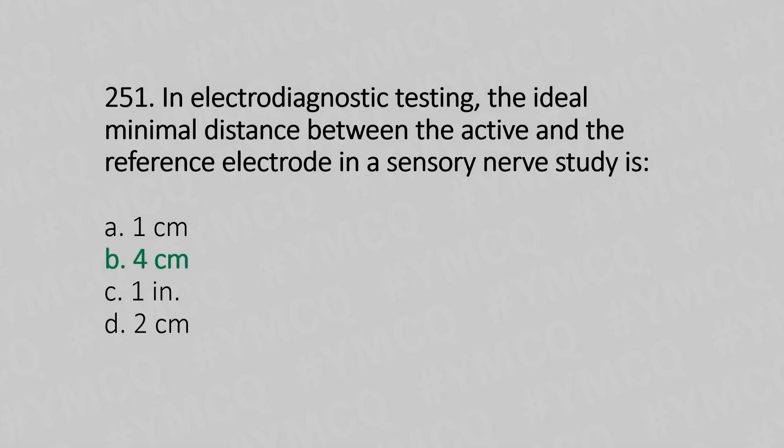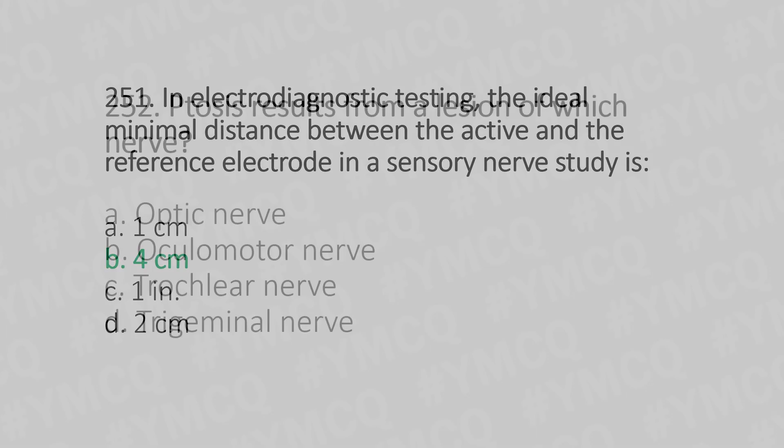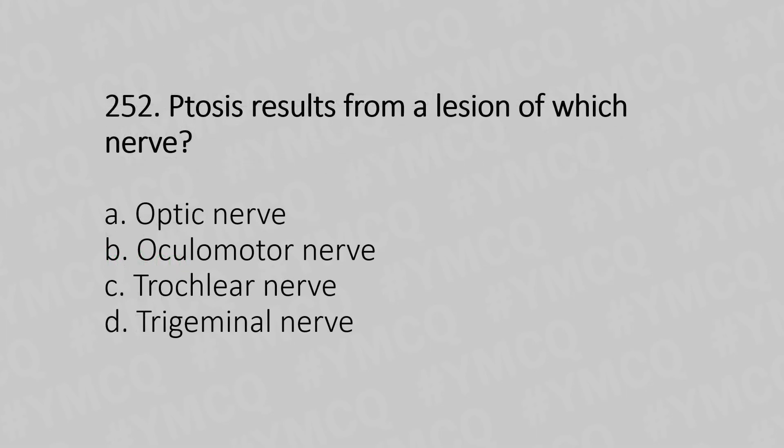Question 252: Ptosis results from the lesion of which nerve? Option A: optic nerve. Option B: oculomotor nerve. Option C: cochlear nerve. Option D: trigeminal nerve. The answer is Option B, oculomotor nerve.